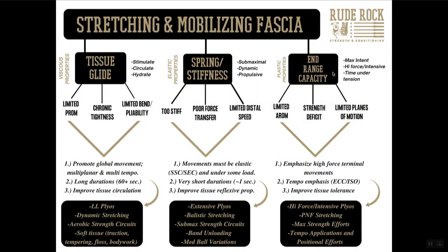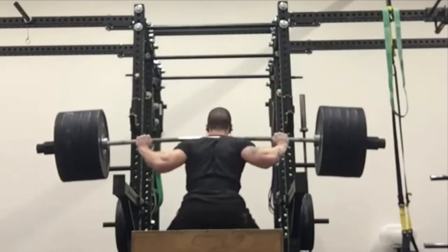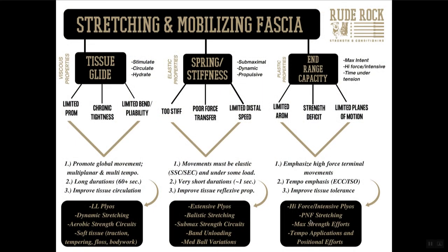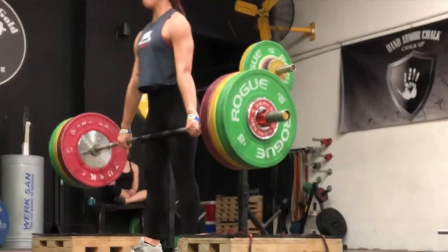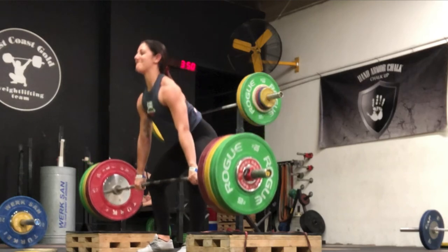To round it out for plastic properties — end range and terminal capacity — this requires maximum intent. Referring back to the stress-strain chart, we need high force or intensity, and time under tension is a big one. For these athletes, we emphasize high-force terminal action movements, tempo emphasis, lots of eccentrics, lots of isometrics, and improving tissue tolerance. We're thinking high-force intensive plyos, PNF-type stretching, and max strength efforts — above 80 to 85%. Tempo applications and positional efforts are going to be game changers here.